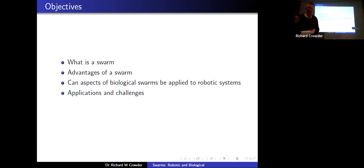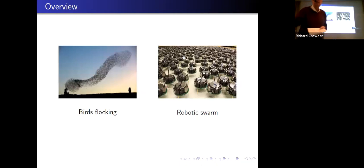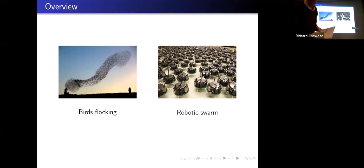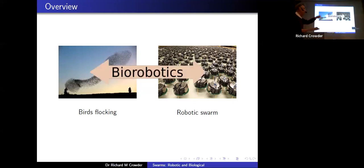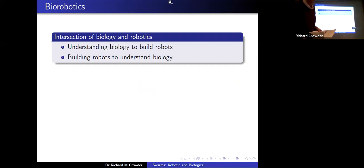What I want to first introduce is the concept of biorobotics. We've got birds flocking and we've got a robotic swarm. At first glance those are not related, but there is a science called biorobotics which runs between those two domains. It is an intersection of robotics and biology — not one of the most obvious branches of science, but actually very interesting and very fundamental. We can use biology to build robots, and if you look at most robots, they're very anthropomorphic: robot wrists, robot arms, robot elbows.